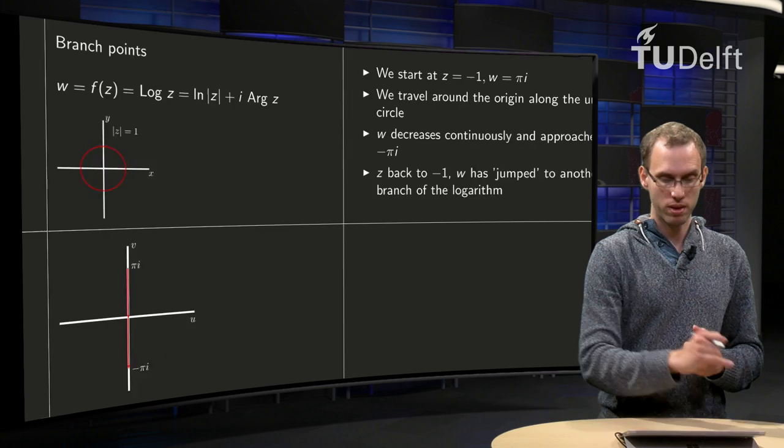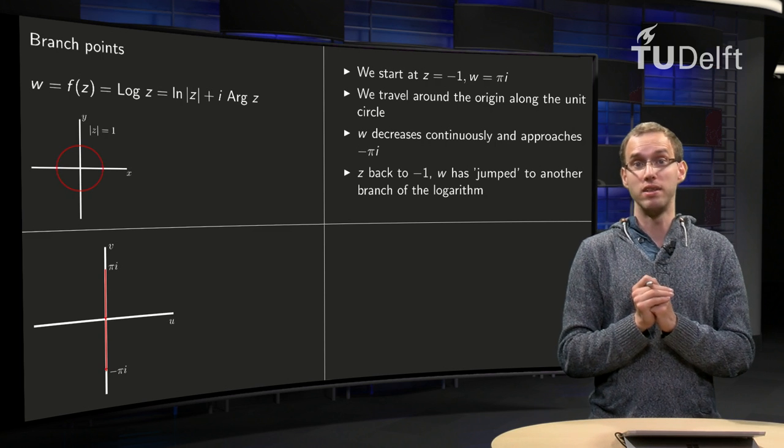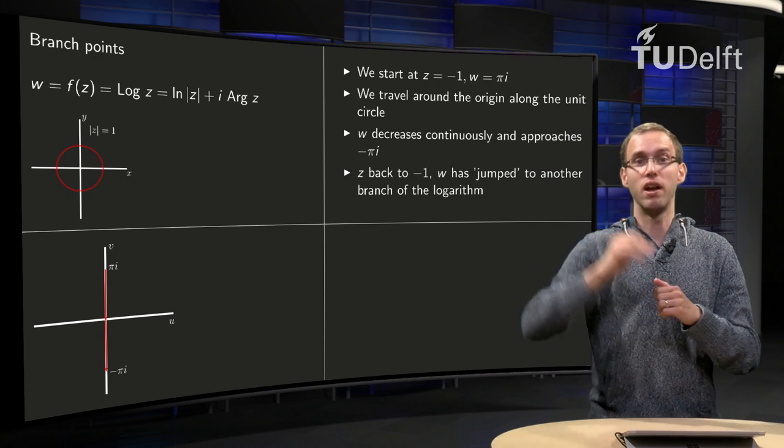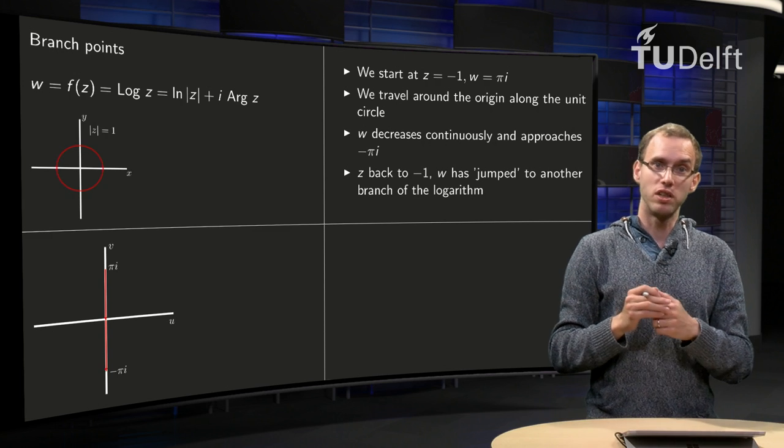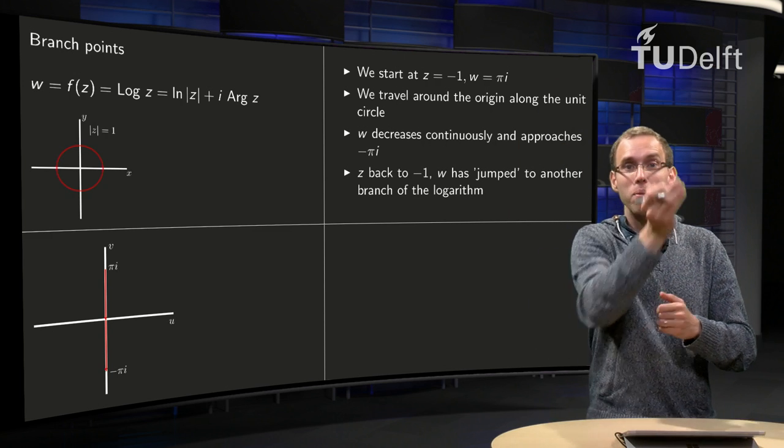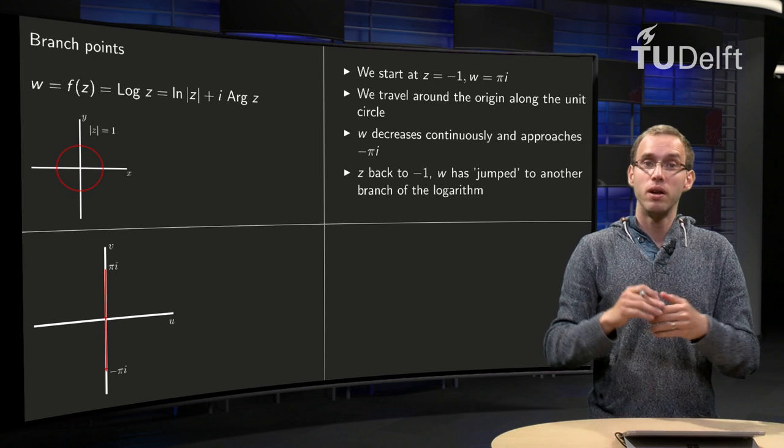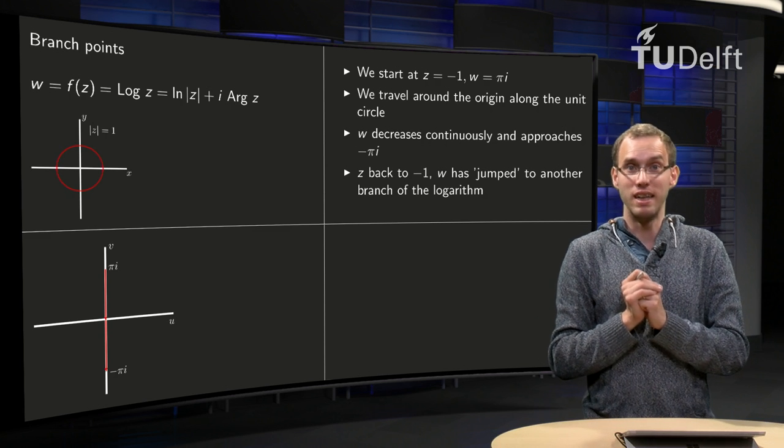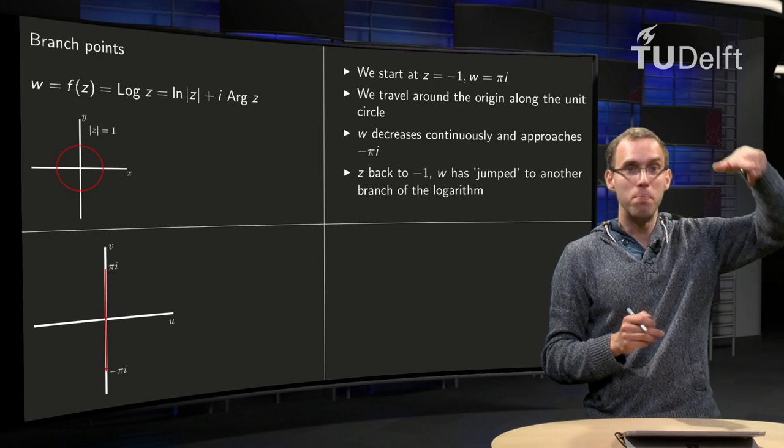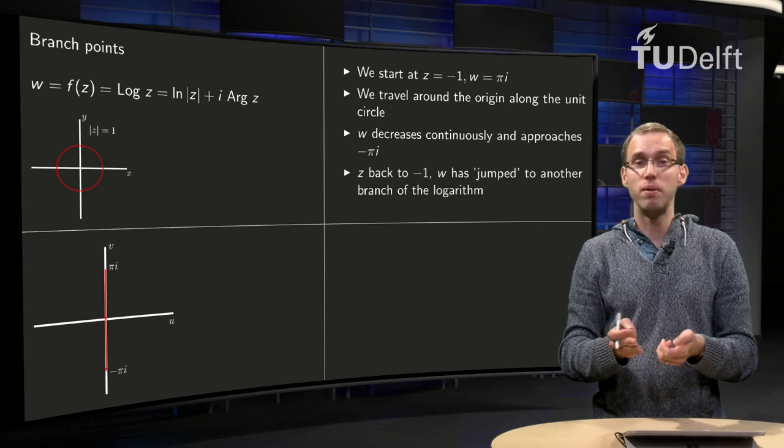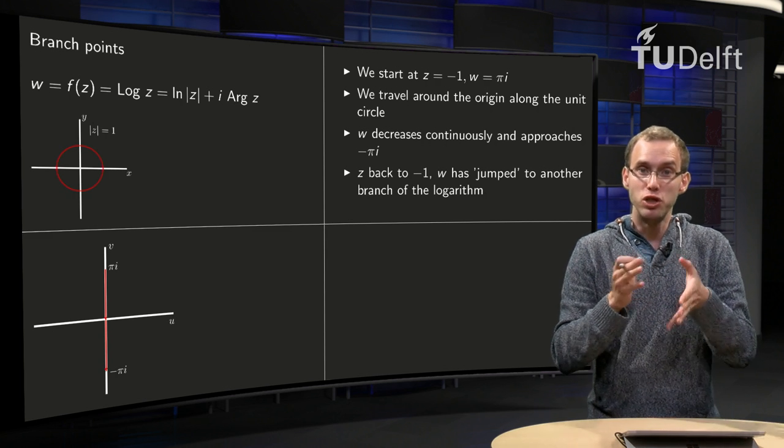So what happened? We start at z equals minus 1, and then in the codomain we are at w equals pi i. We start to travel around the origin, so we get z equals i and w equals pi over 2 i, etc. Once we have gone around, we are in the domain again back at the same place, so we approach z equals minus 1 again. But in the codomain we are approaching minus pi i. So in the domain we are back where we started, but in the codomain we have made a jump to another branch of the logarithm. That means our function makes a jump at that point.